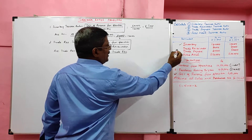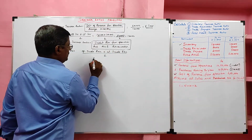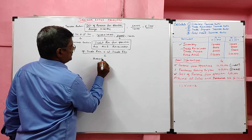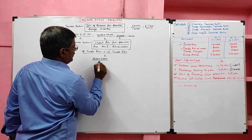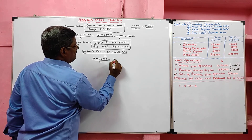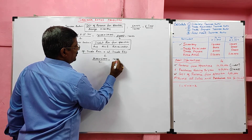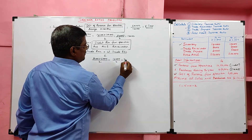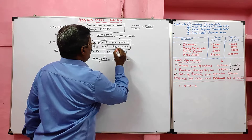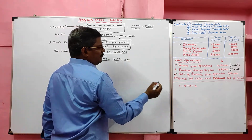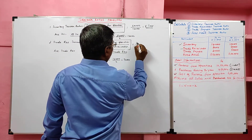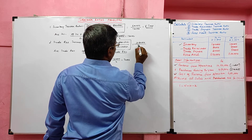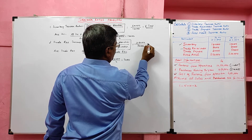Opening trade receivable 80,000, closing trade receivable 60,000, divided by two gives 1,40,000 divided by 2 = average trade receivable of 70,000. Credit revenue from operation is 10,50,000 divided by 70,000 — our answer is 15 times.